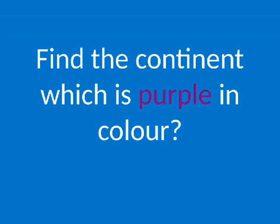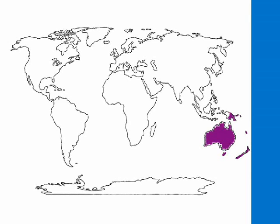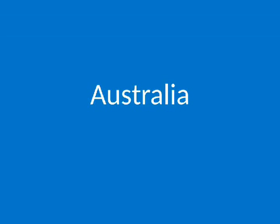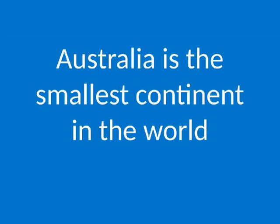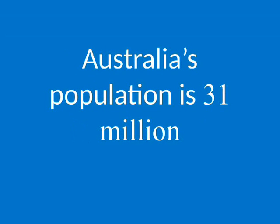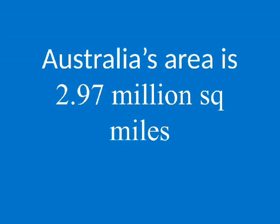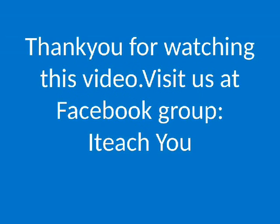Find the continent which is purple in color. Australia. Australia is the smallest continent in the world. Australia's population is 31 million. Australia's area is 2.97 million square miles. Thank you for watching this video.